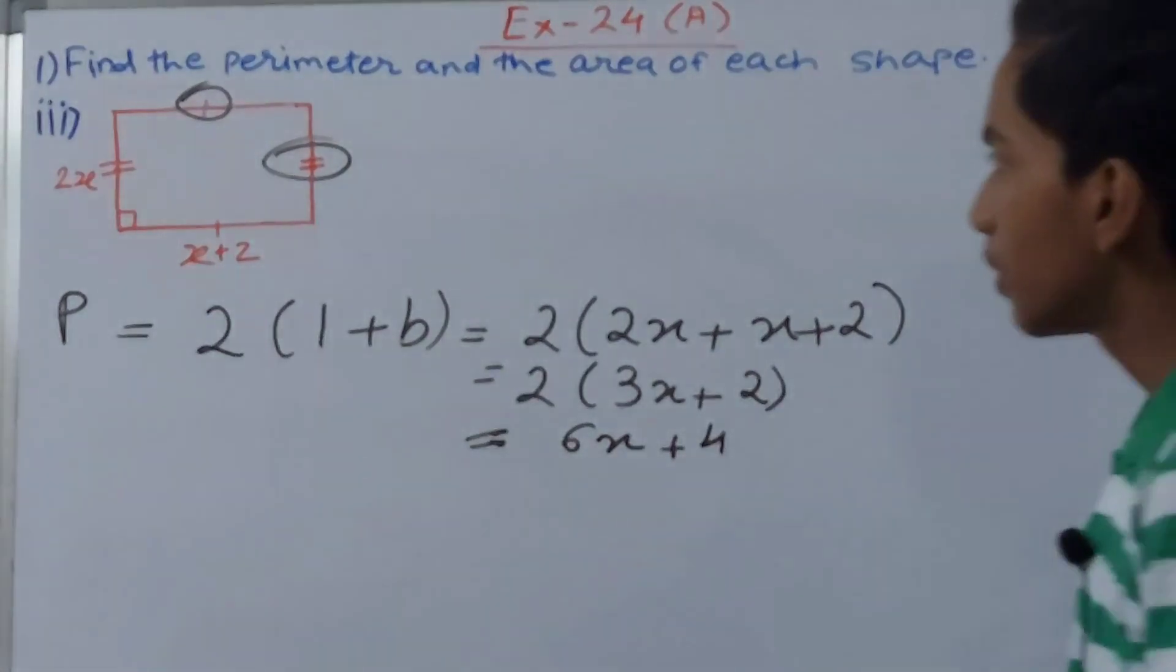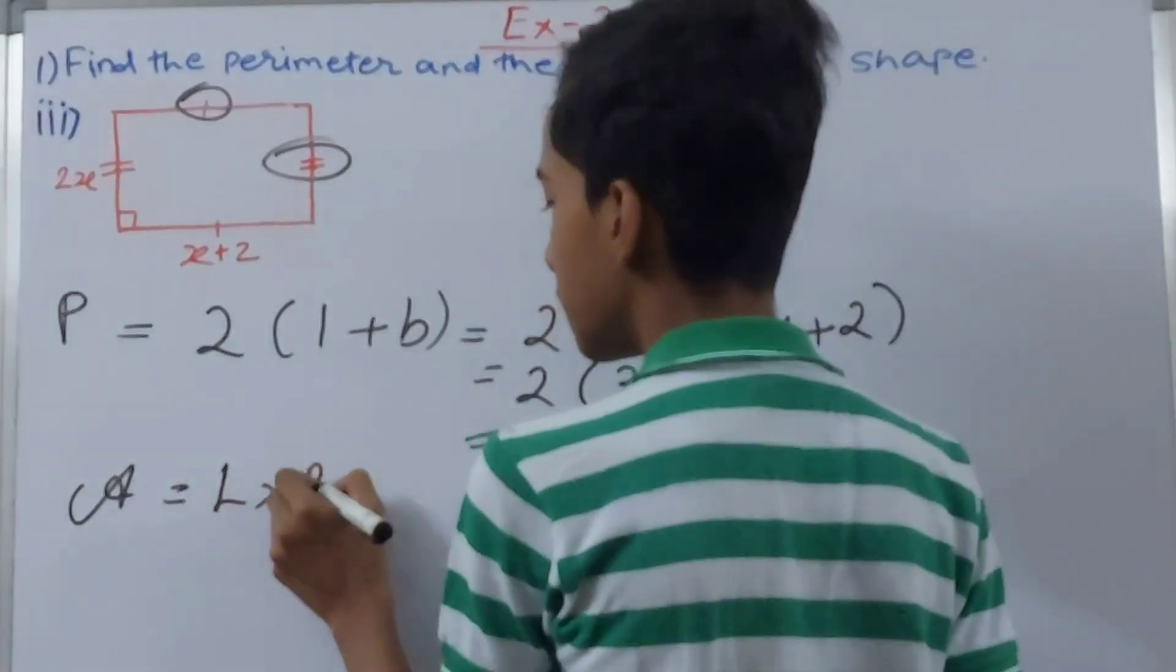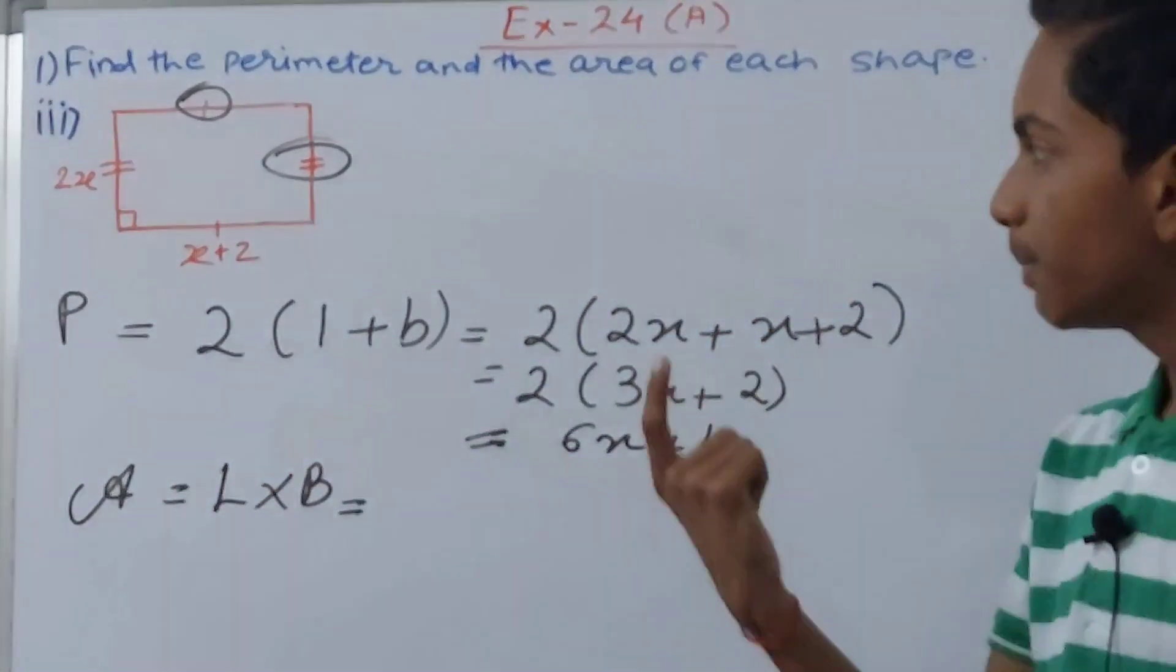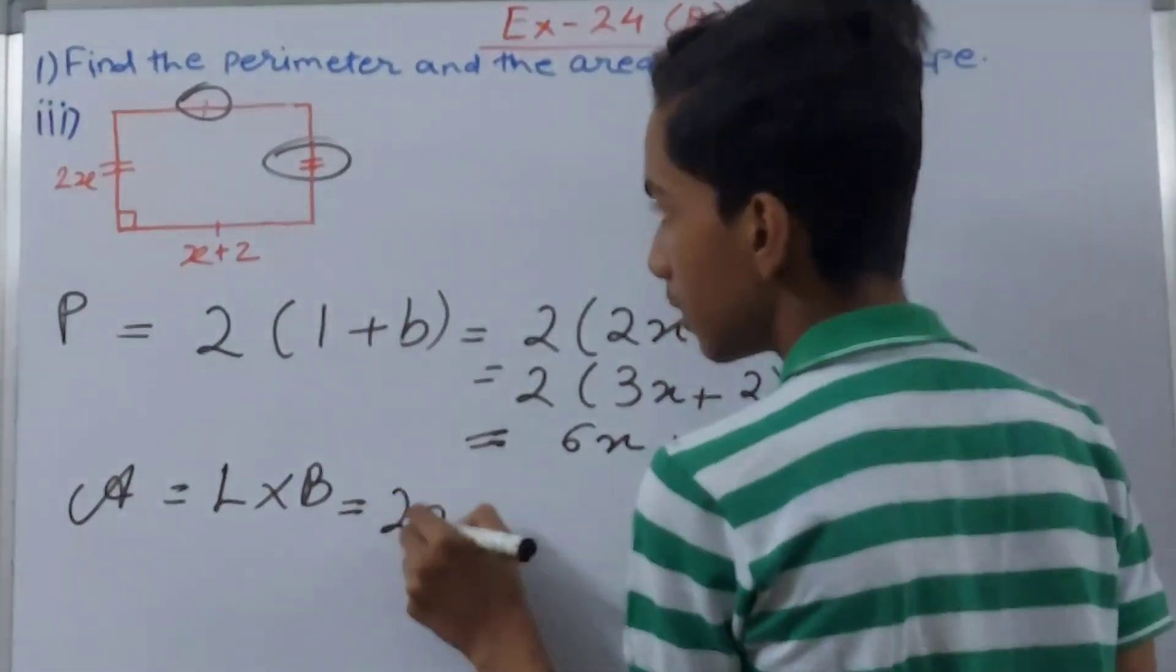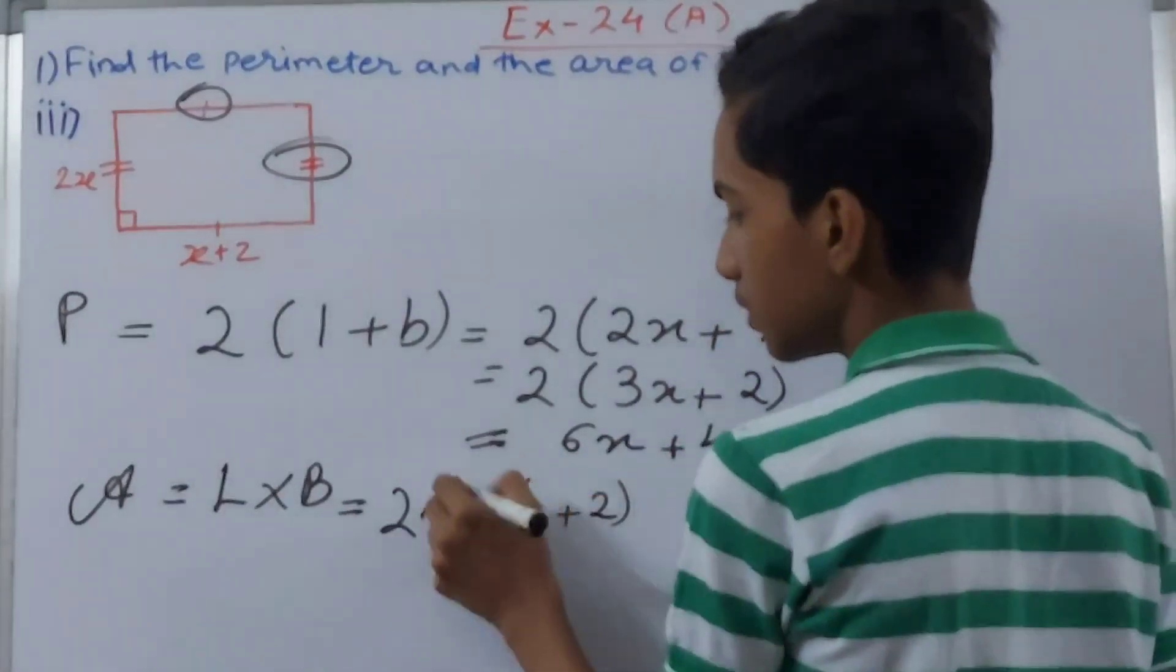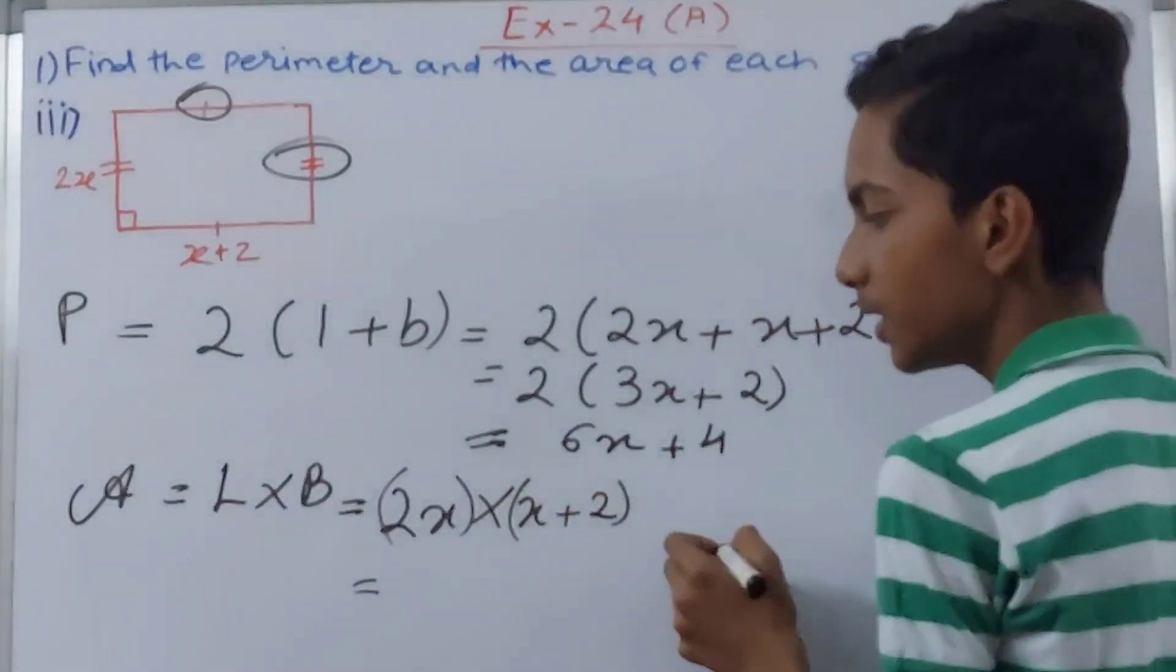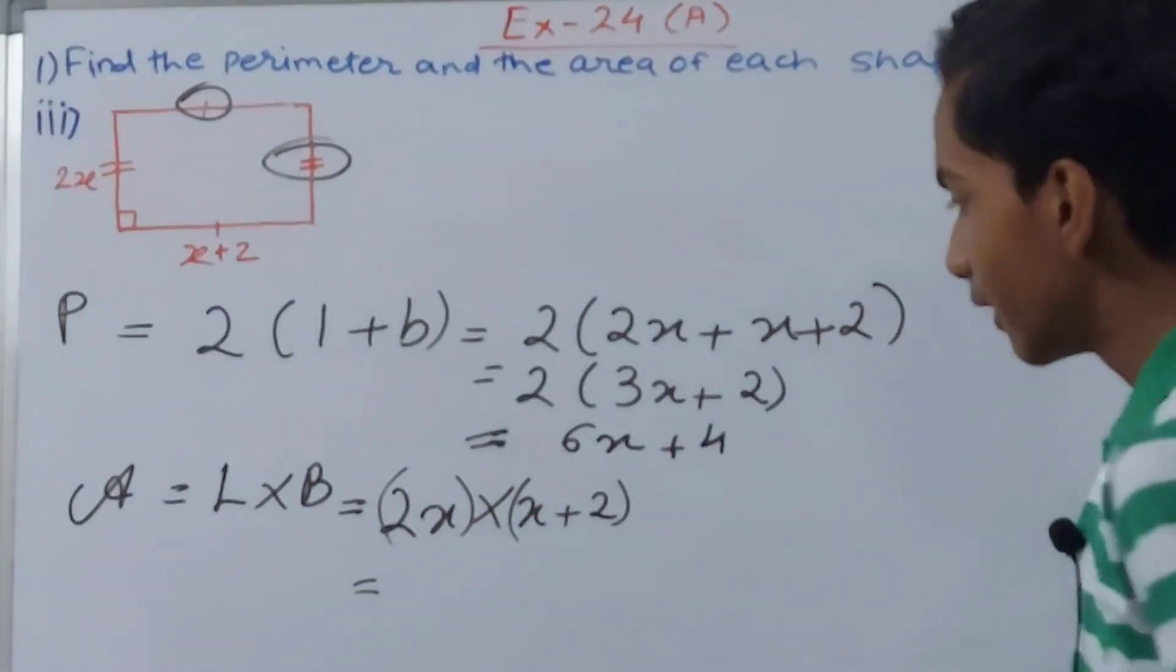Next we have area. For area we have length times breadth, but we again don't know what is the length or breadth, so multiply the two sides that are given to us, that is 2x times x + 2. So what will this give us? Both of these will be multiplied. We'll use the distributive property.